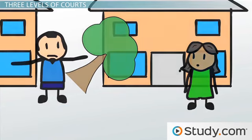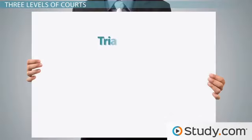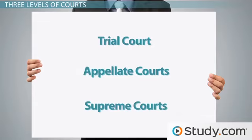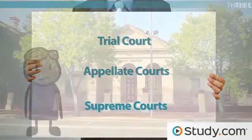Deciding on the court is simple. Trial courts settle cases between two parties seeking remedy for the very first time. Appellate courts oversee cases where one of the parties does not like the trial court outcome. And Supreme Court resides over the highest level of cases, or those cases appealed in appellate court.